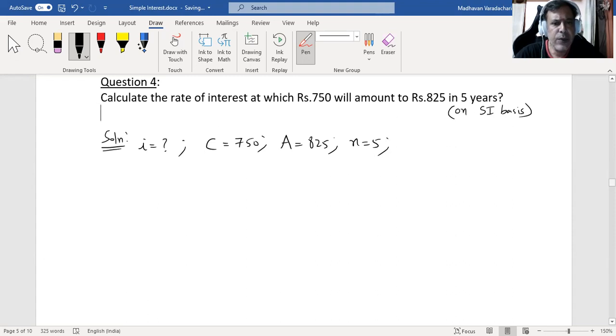Again we will use the amount formula, which is A = C times (1 plus n times i), or 825 equals 750 times (1 plus 5i).